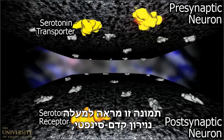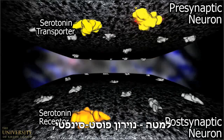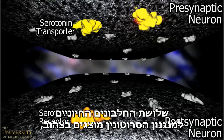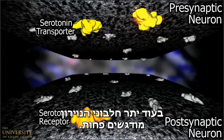This scene shows a presynaptic neuron on top, a postsynaptic neuron below, and the gap of synaptic space in between. The three proteins essential to serotonin's mechanism are shown in yellow, while the neuron's other proteins are rendered less prominently.